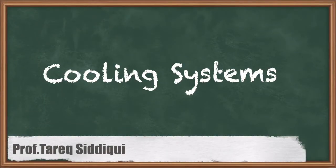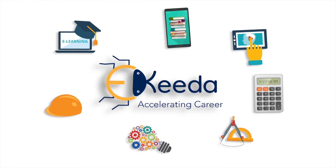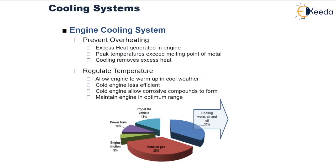In this lecture we are going to study the cooling systems used in internal combustion engines. The source of energy in an IC engine is the burning of fuel, wherein chemical energy is converted into heat energy. As heat is released, a wide range of temperatures may be observed in an IC engine, ranging from 35 degrees Celsius minimum to as high as 3000 degrees Celsius during the cycle.